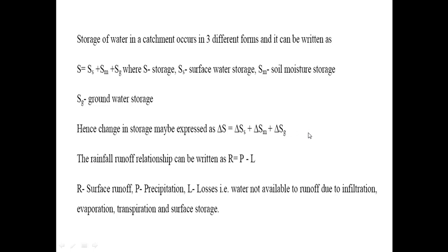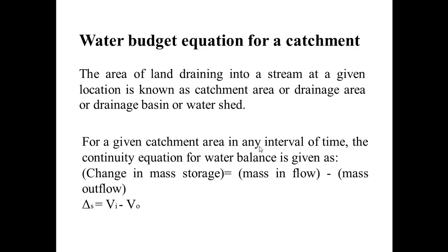The rainfall-runoff relationship can be written as R equals P minus L. This equation is used for finding the relationship between rainfall and runoff, where R is surface runoff, P is precipitation, and L represents losses — water not available to runoff due to infiltration, evaporation, transpiration, or surface storage.